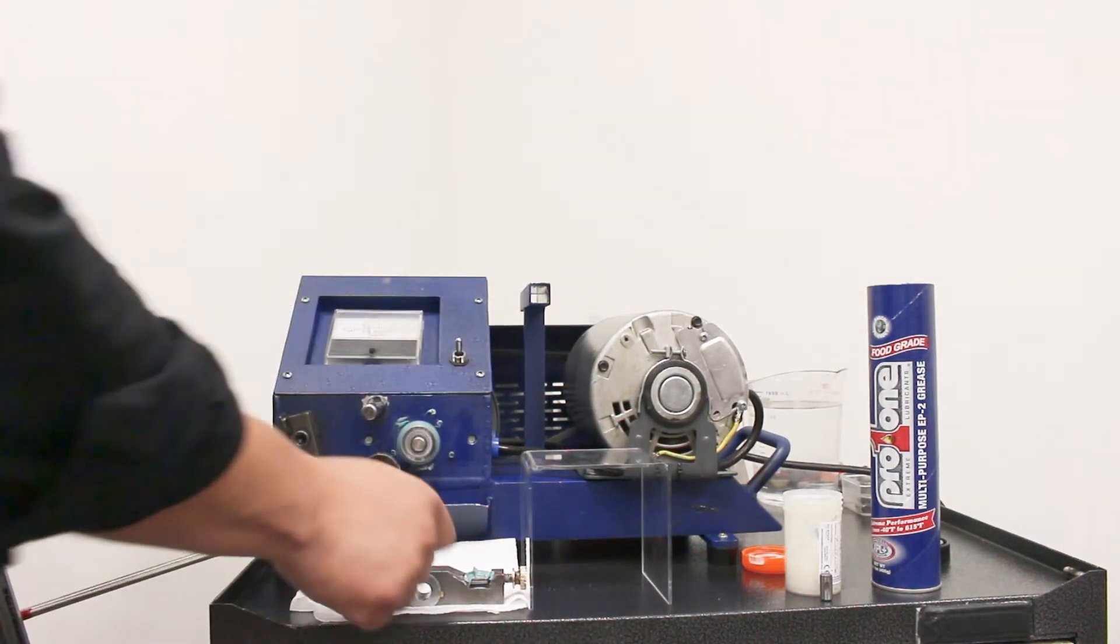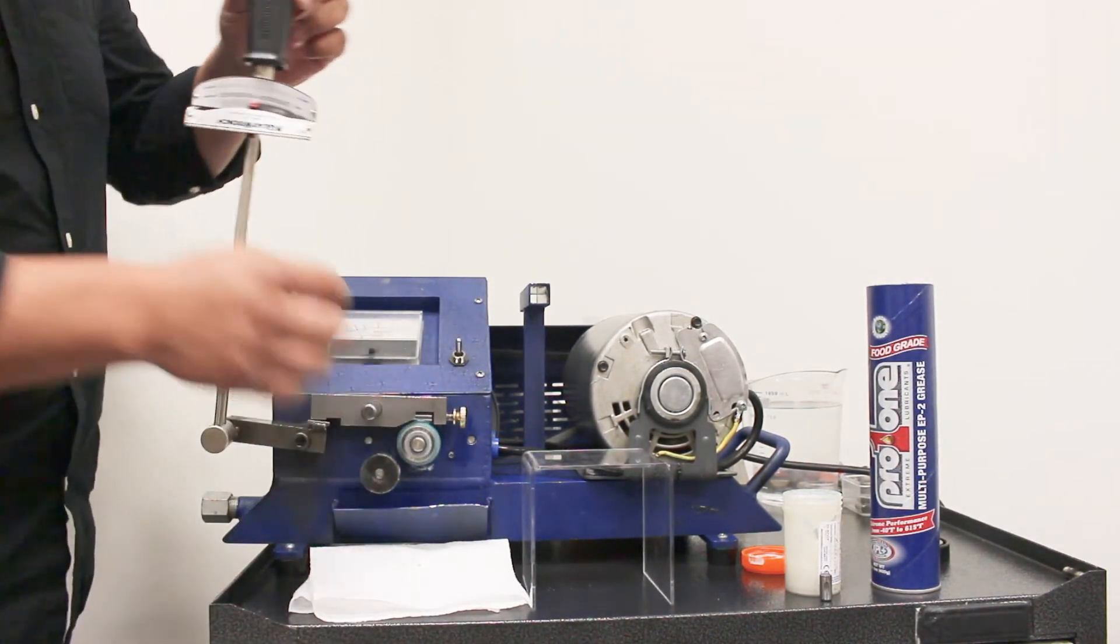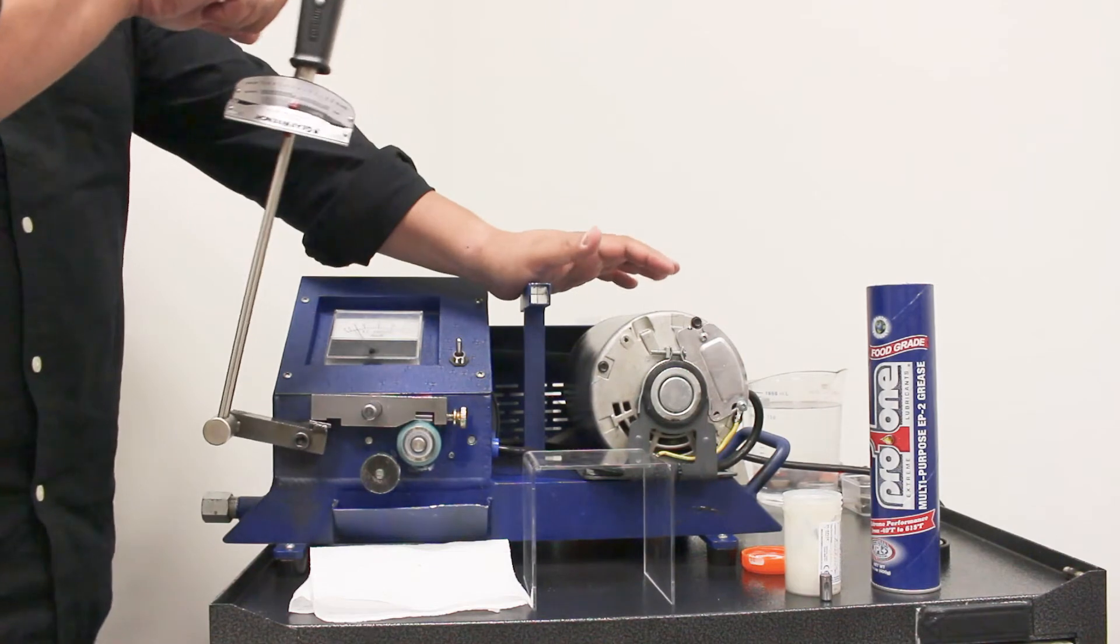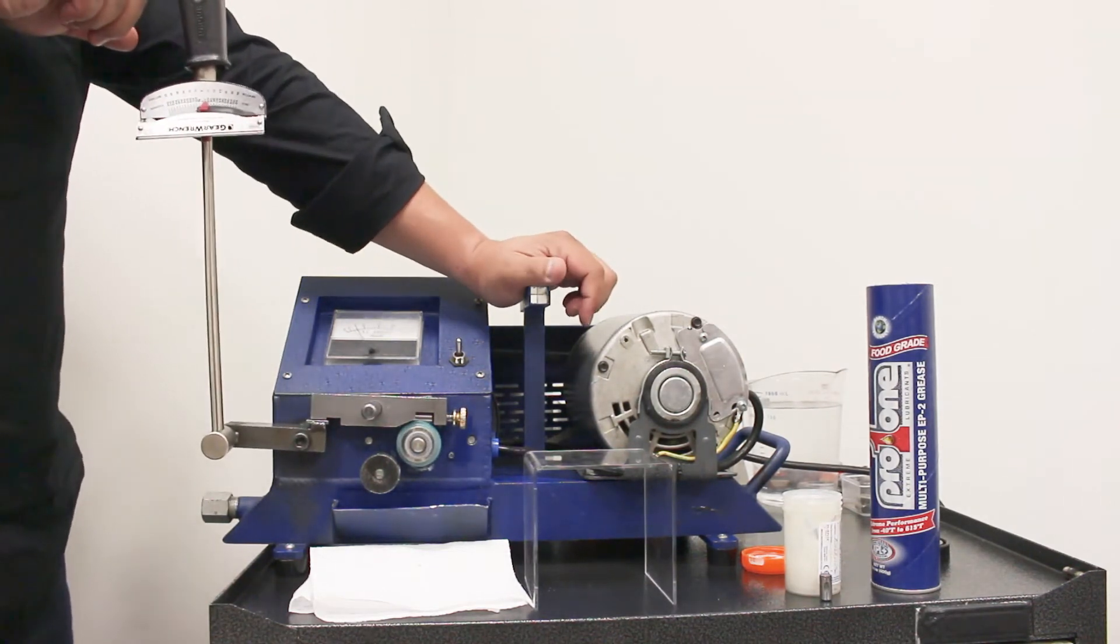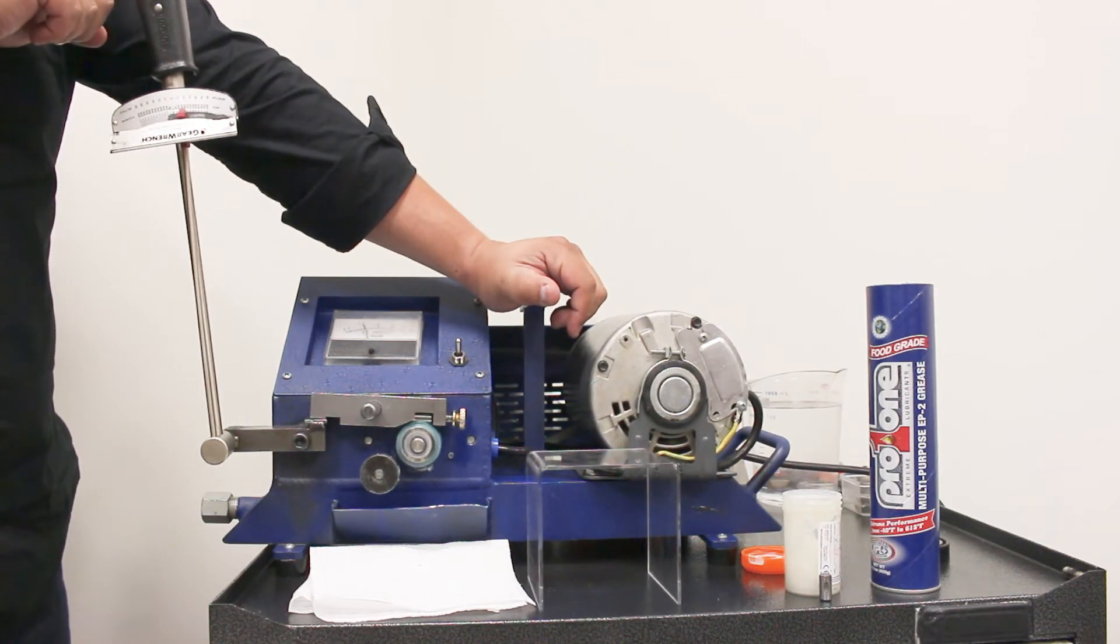Now we will turn on the machine, just like we did before. And notice that when I, as soon as I apply pressure to the spinning rings, the first thing you'll notice is that the noise comes down.